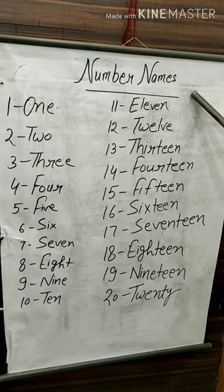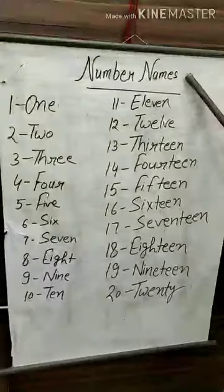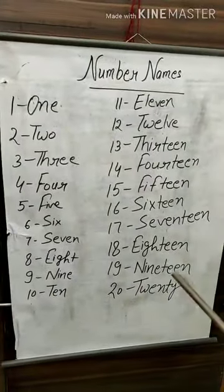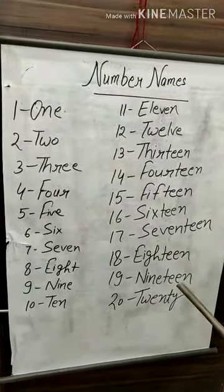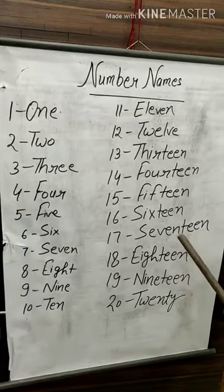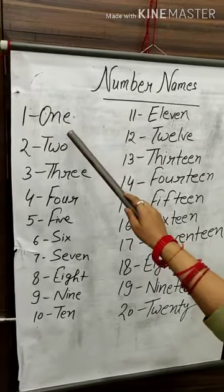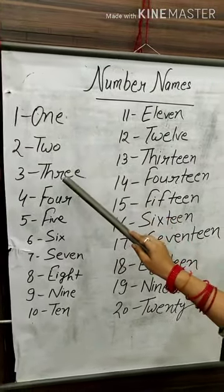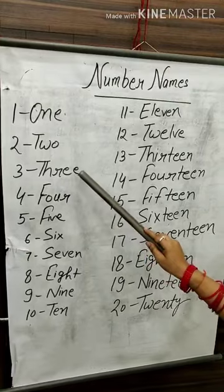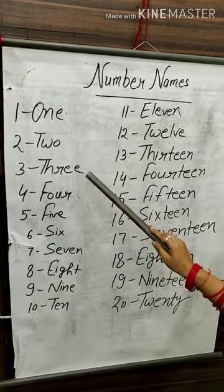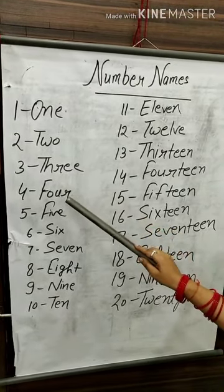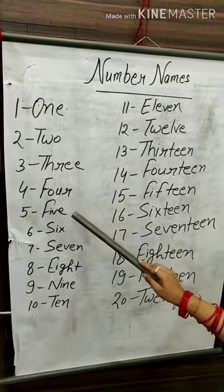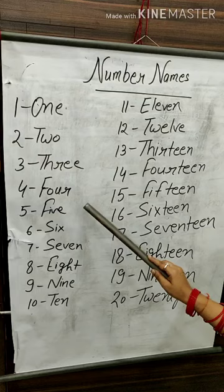My next topic is Number Names. Now let us learn numerals for Number Names. O-N-E 1, T-W-O 2, T-H-R-E-E 3, F-O-U-R 4, F-I-V-E 5.